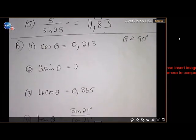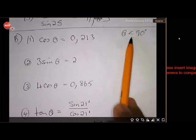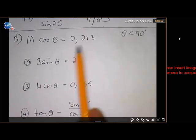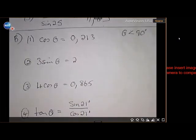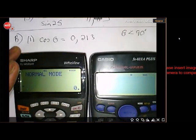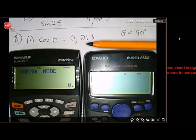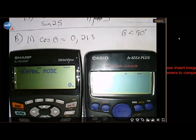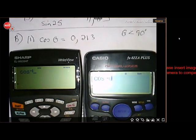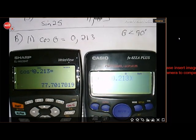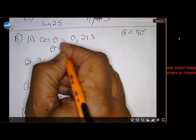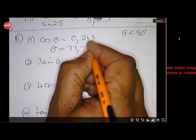In all these examples theta is an acute angle, so all values are in the first quadrant. For the first one, use the inverse cosine: Second Function + cos on the Sharp, or Shift + cos on the Casio. Enter 0.213, close the bracket on the Casio, and press equals. The answer is 77.7 degrees, so theta is 77.7°.